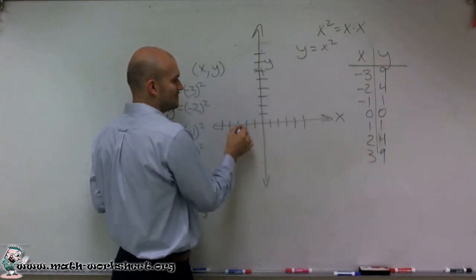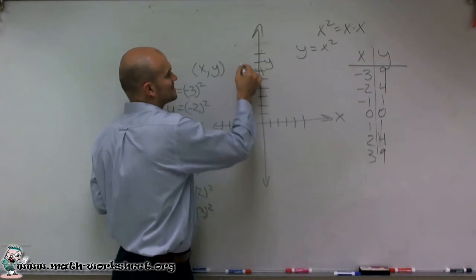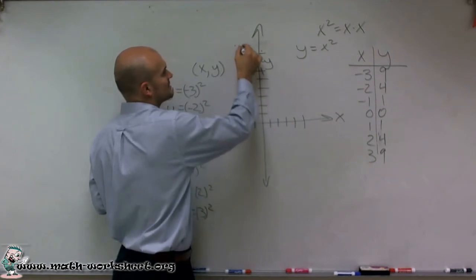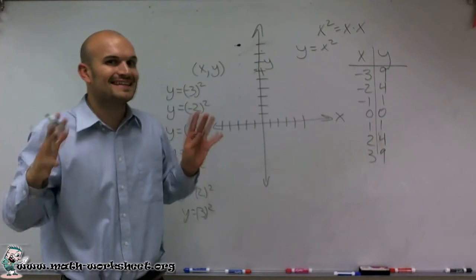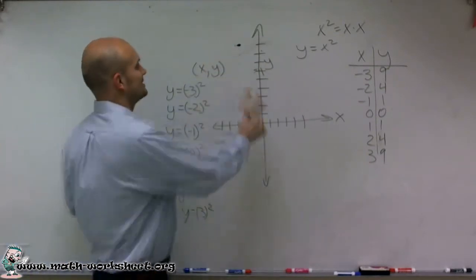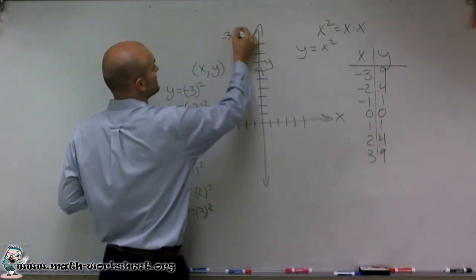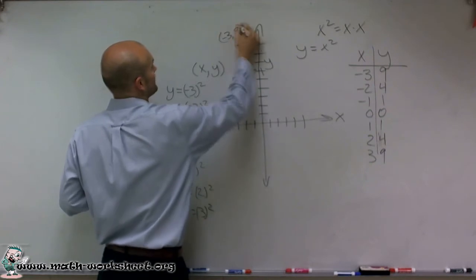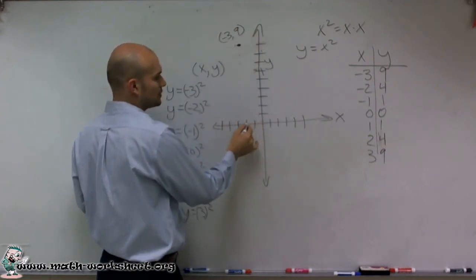I go over 3 and then up 9. I'm just sketching this graph — I'm not going to get it exactly right, but you should know that this point is at negative 3, 9. Now let's find our next point, negative 2, 4. So now I only go over 2 and then up 4, giving us negative 2, 4.